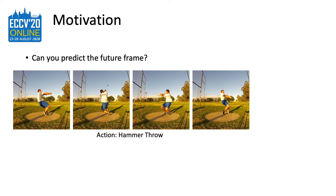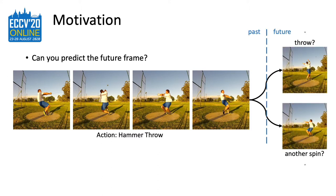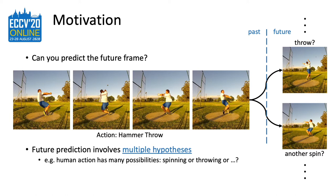Now, can you predict the future frame, even the rough human action? Perhaps this is also not easy. This example is hammer throw. Do we know in the near future if the human is going to throw away the hammer or spin for another cycle? Throwing and spinning are the two modes of the future for this video — both of them can happen. Thus, we see predicting the future involves multiple hypotheses.